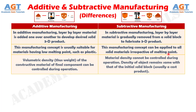Difference number 3. In additive manufacturing, volumetric density, and thus weight, of the constituent material of the final component can be controlled during operation. Whereas, in subtractive manufacturing, the density of the object remains the same as that of the initial solid block, usually a cast product.